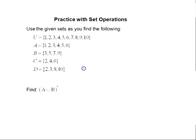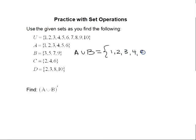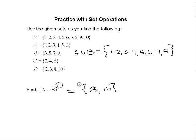Let's do another example: find the complement of (A union B). Notice the parenthesis — do what's inside first. A union B joins sets A and B together: {1, 2, 3, 4, 5, 6, 7, 9}. Now the complement of A union B is everything in the universal set that's not in A union B, which is just 8 and 10.